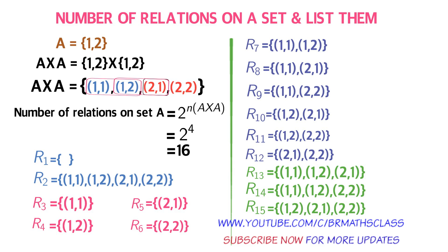Now the last relation, the 16th relation. Observe R13, R14, and R15 — we haven't yet formed a relation starting with ordered pair (2,1) and (2,2) only, so R16 would be {(1,1), (2,1), (2,2)} completing all 16 relations on set A.